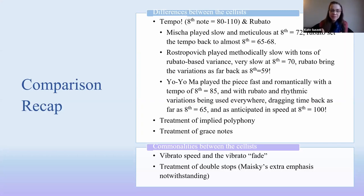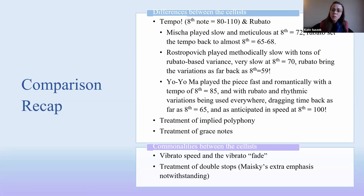Yo-Yo Ma obviously played much faster than both of them almost combined, so calculating his tempo was tough. I got about eighth note equals 85 as a starting place, but quite immediately you hear him taking time with rubato and rhythmic variations that were hard to clock — there's nothing score-based to go off of for what he did. He did an amazing job pushing with that eighth note equals 85, which is only five clicks above what we consider normal, but his variations dragged him back as far as eighth note equals 65 and as high as about eighth note equals 100, which is quite fast for this piece.